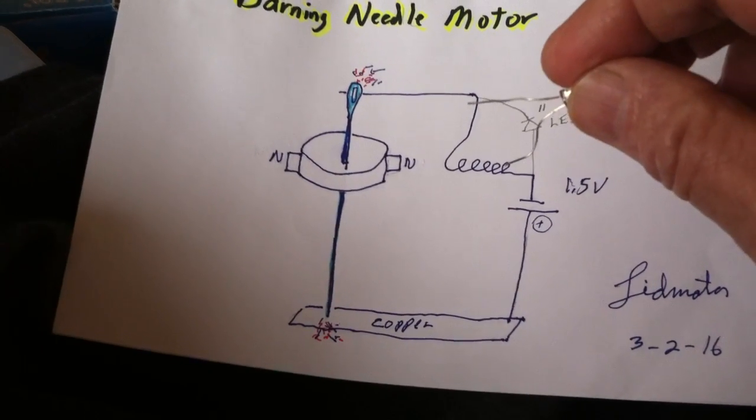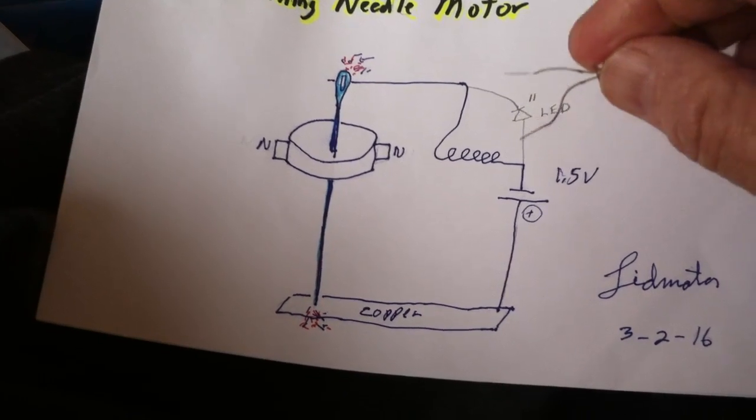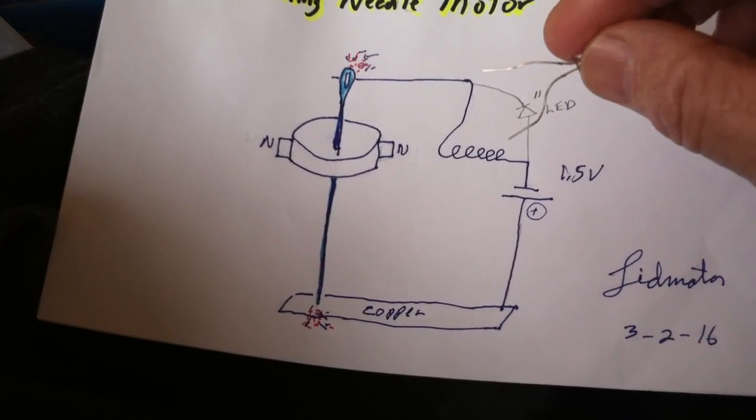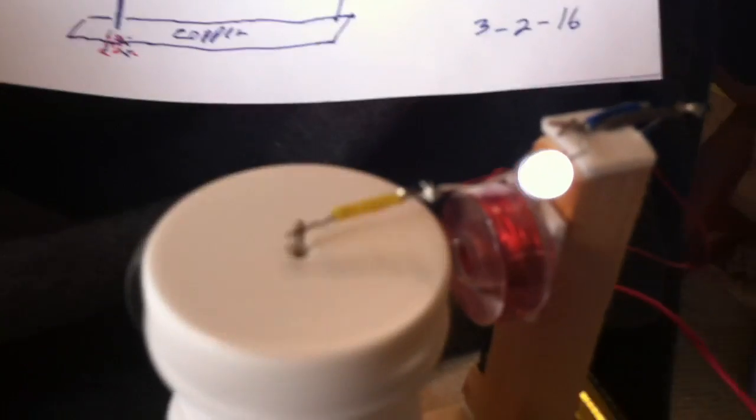You get this inductive kickback that is a voltage spike with low amperage but higher voltage than the power source, and you make a voltage booster. That's what I've got going on right there.